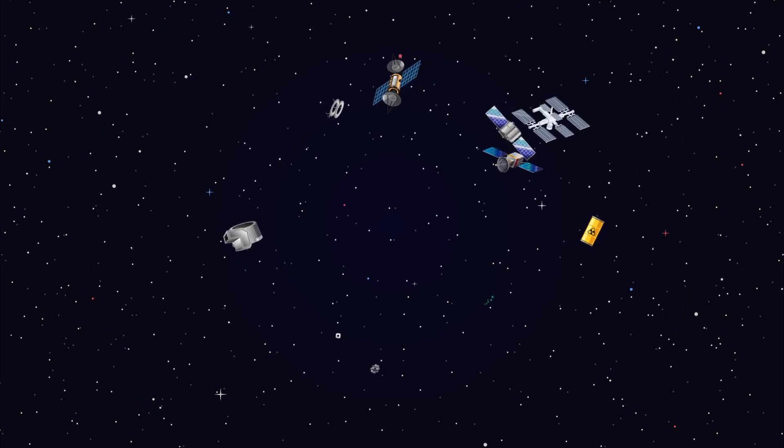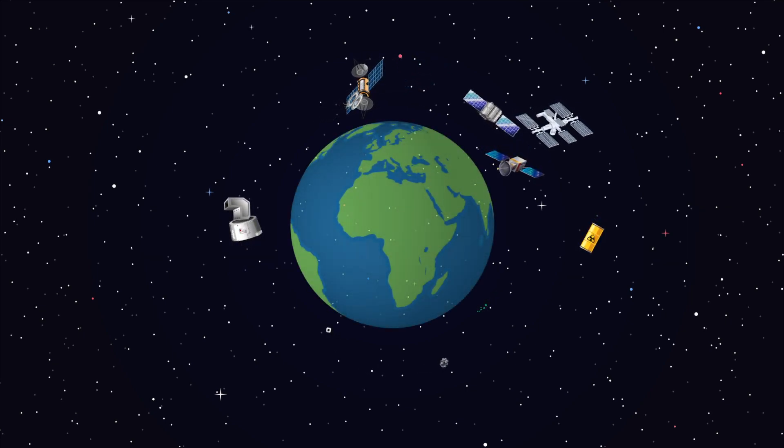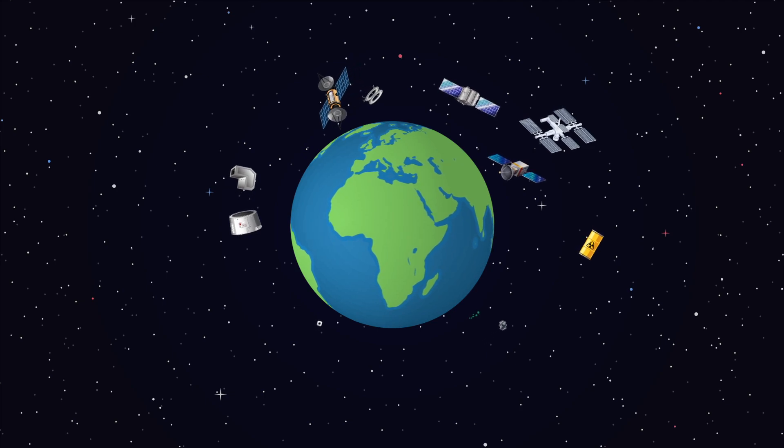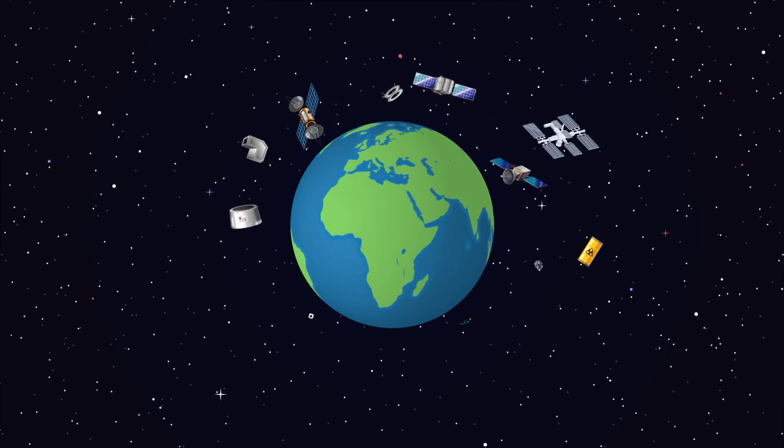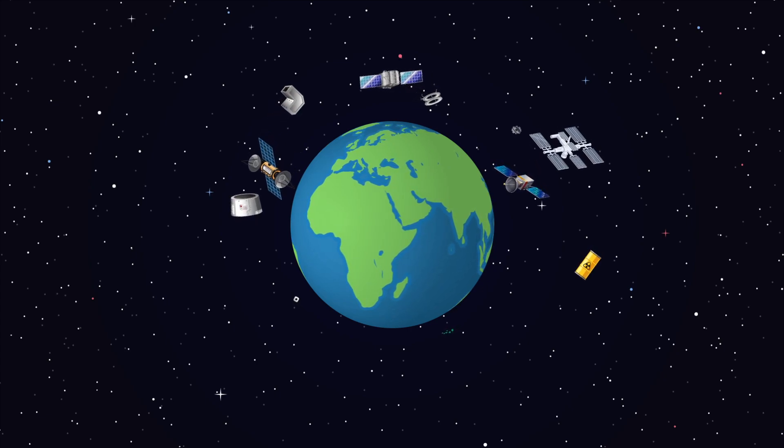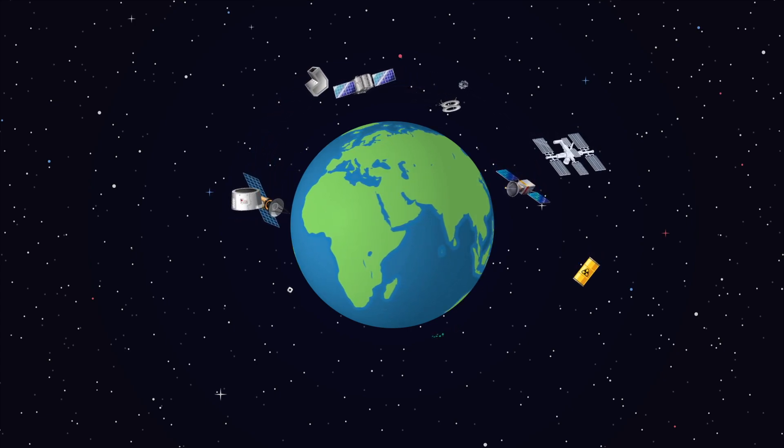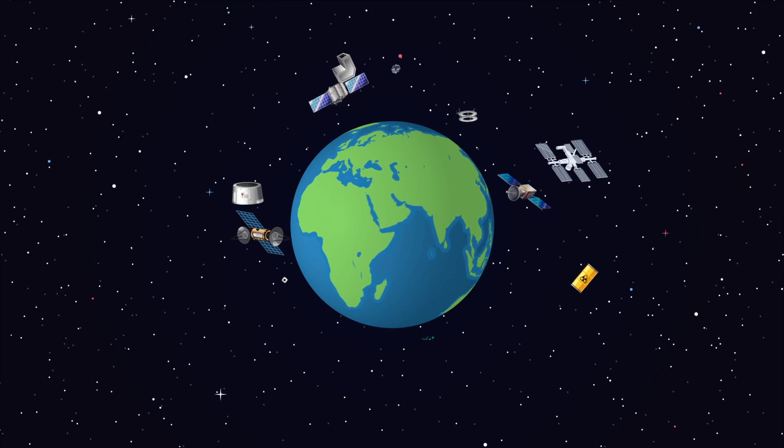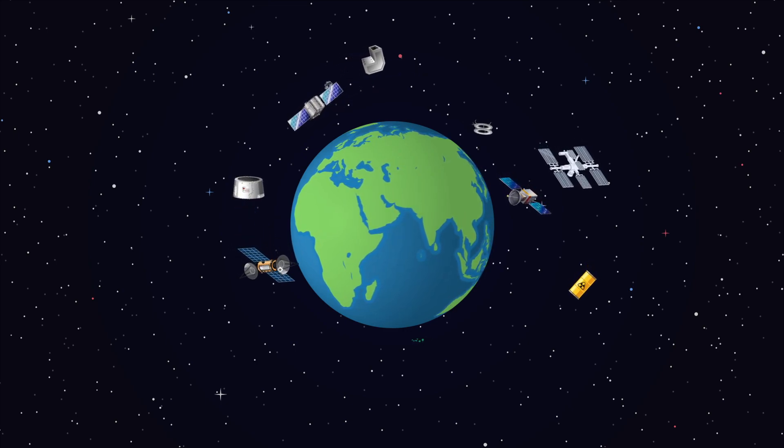It refers to all the debris that is generally around the Earth's orbit. The debris consists of all the human-made objects that no longer serve a function. This includes spacecrafts, launch stages of rockets, waste from the rockets, and the fragmentation of these objects.